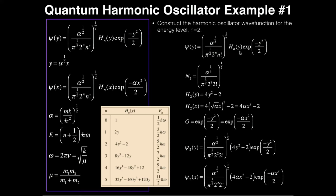Next, let's deal with the Hermite polynomial. The second Hermite polynomial as a function of y — we come to the table and it's 4y squared minus 2. Now because I eventually want to set it up as a function of x, everywhere I see a y I make the substitution alpha to the one-half times x, i.e., square root of alpha times x. When you simplify, the Hermite polynomial at energy level 2 as a function of x is equal to 4 alpha x squared minus 2 — the same polynomial but as a function of x, now carrying an alpha.